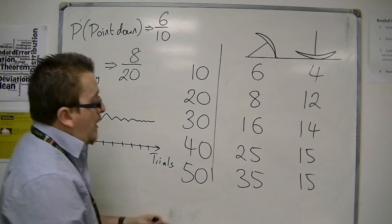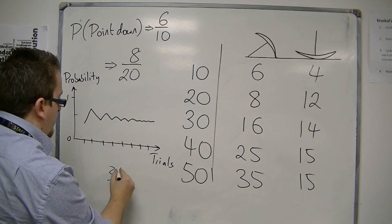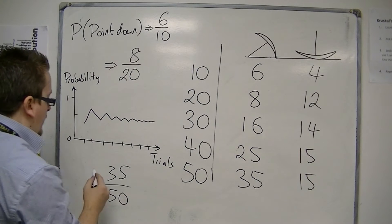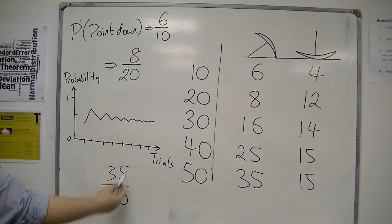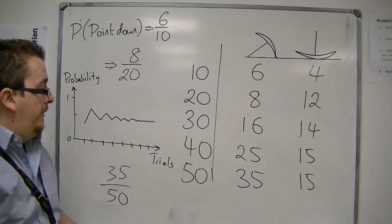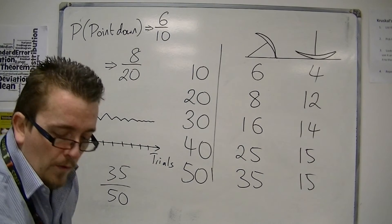By the time I've done fifty trials, thirty-five out of fifty is a better probability, a more accurate probability, than my first ten trials. So let's see what this means.